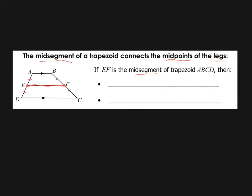So if EF is the mid-segment, then we're going to know two things about it. One is that EF is parallel to both AB and DC. Now keep in mind, AB and DC were already parallel anyway. That's what makes this a trapezoid, a quadrilateral with one pair of parallel sides. And the mid-segment is also parallel to those sides.